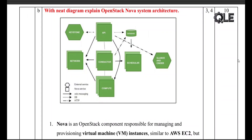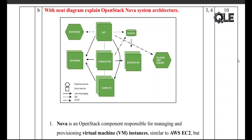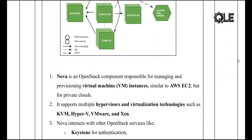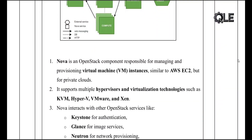Hey everyone, welcome back to QuickLearn Engineering. Today we are diving into the heart of OpenStack's compute service, Nova. If you're curious about how cloud platforms like AWS EC2 work in private environments, Nova is the answer. Nova is the compute component of OpenStack, responsible for creating, managing, and deleting virtual machines — just like AWS EC2 but designed for private clouds.